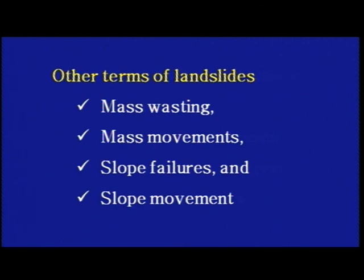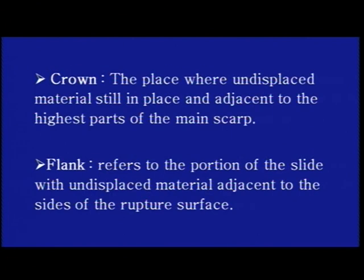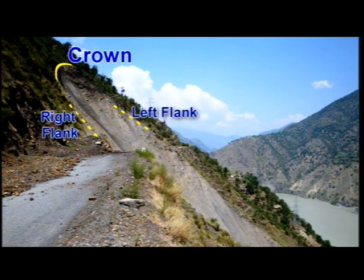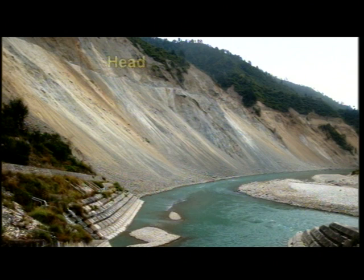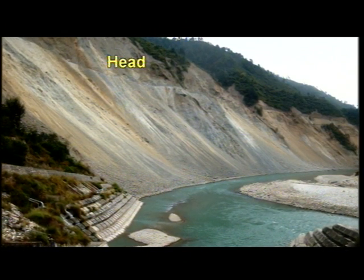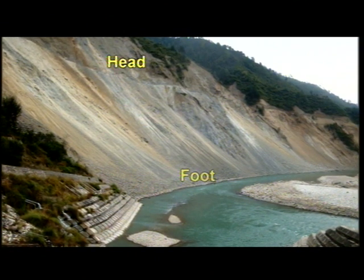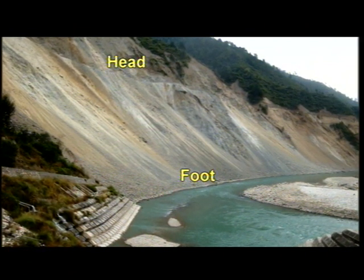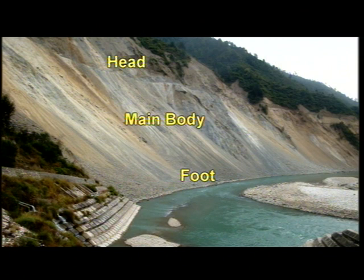Mass movements can range in magnitude from soil creep to huge landslides. The top portion of a landslide is called the crown. Flanks refer to the portion of the slide with undisplaced material adjacent to the sides of the rupture surface. The head of the slide is the upper part along the contact between the displaced material and the main scarp. The foot is the portion that has moved beyond the toe of the surface of rupture and overlies the original ground surface. The main body is the main part of the displaced material overlying the surface of rupture between the main scarp and the toe.